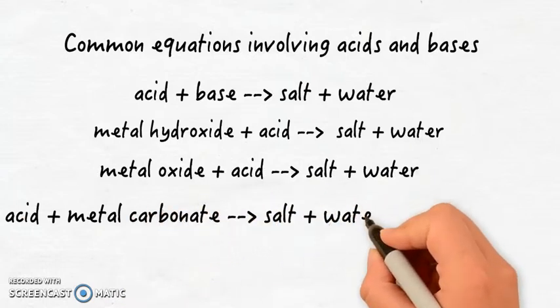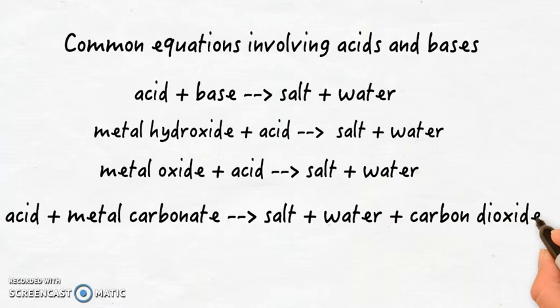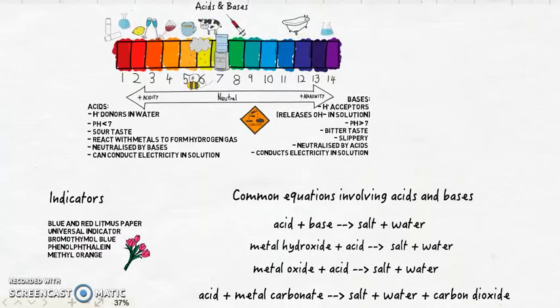An acid and a metal carbonate will give you salt, water, and carbon dioxide gas. These are common equations that you would have learned in stage 5 science. Hopefully this has helped you refresh your memory of the properties of acids and bases so that we can move forward.